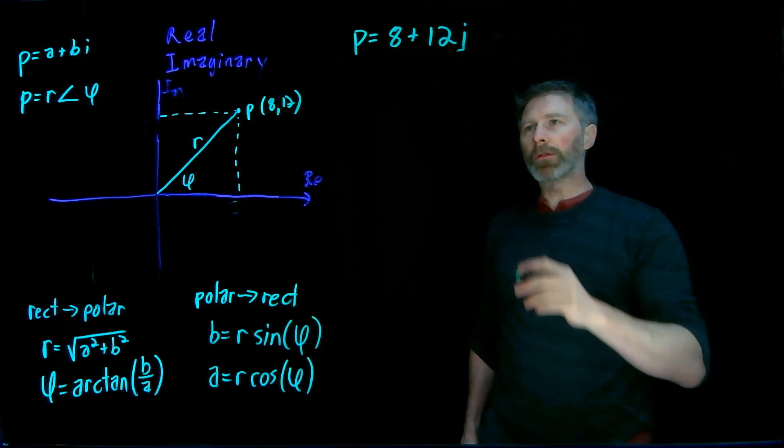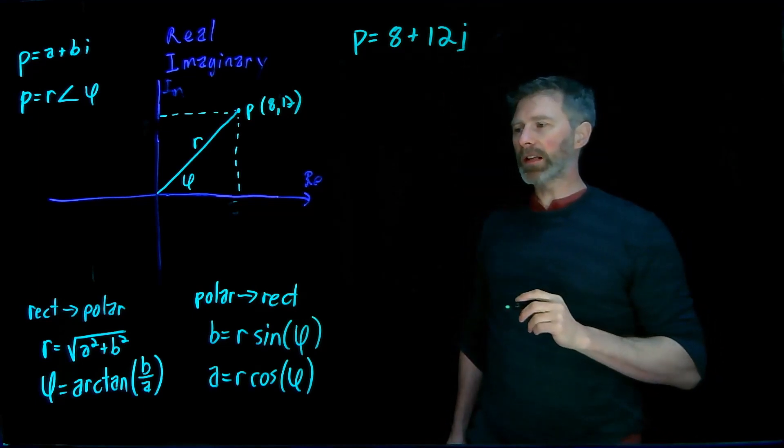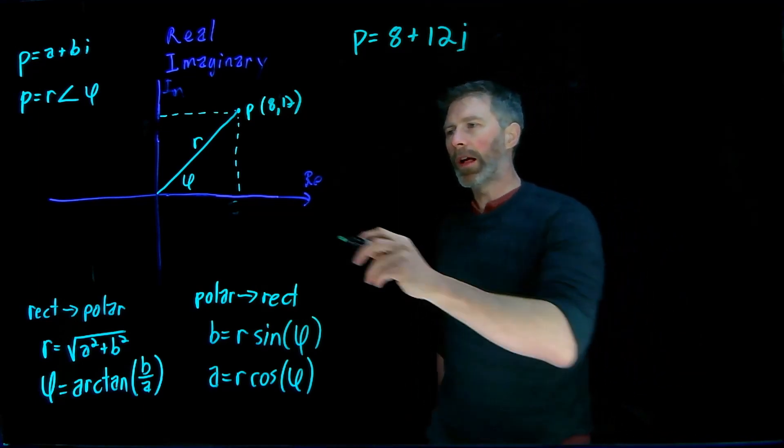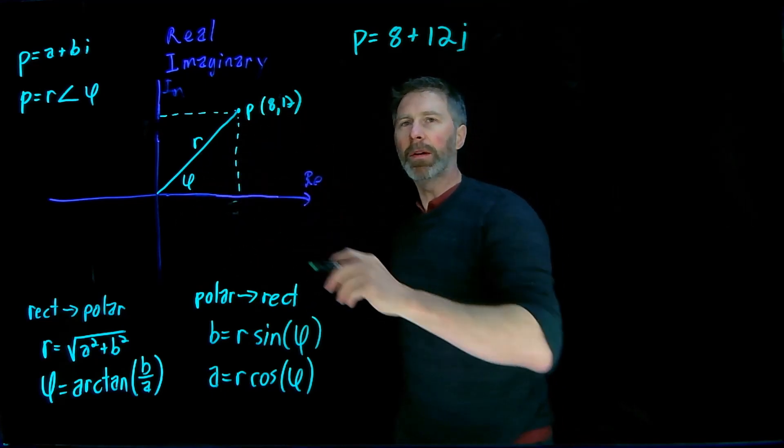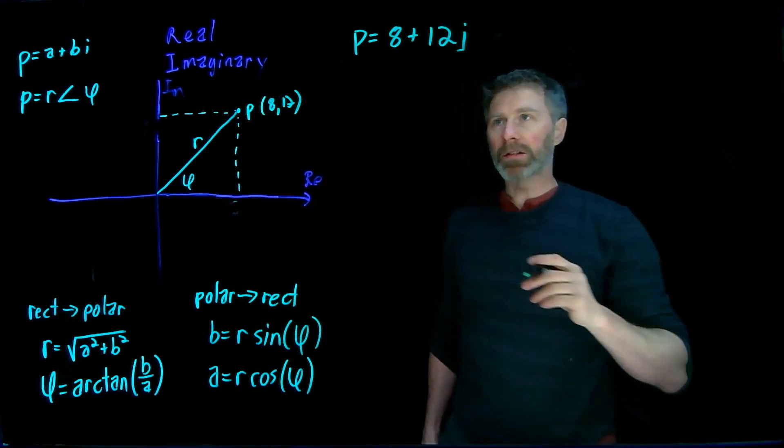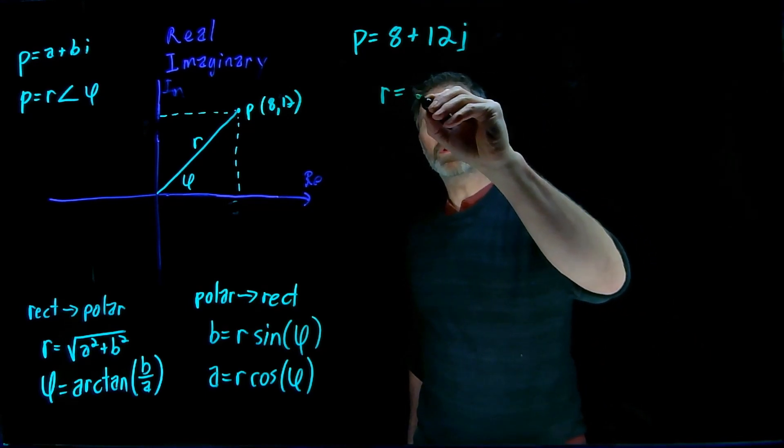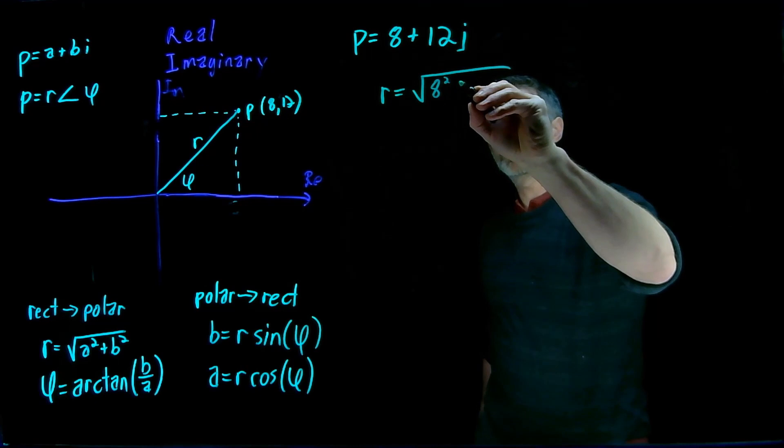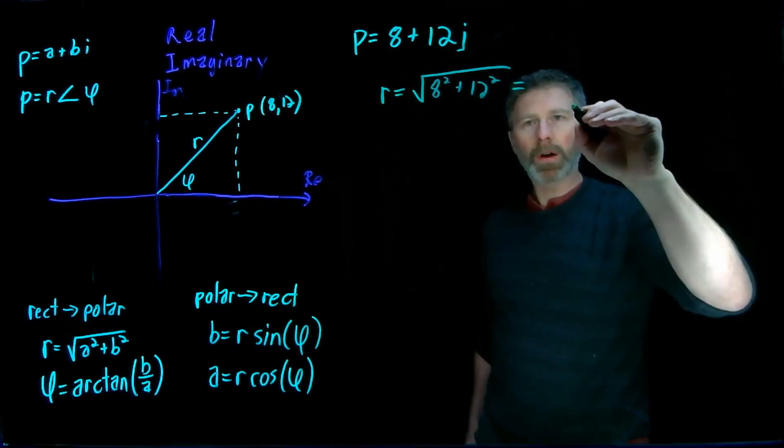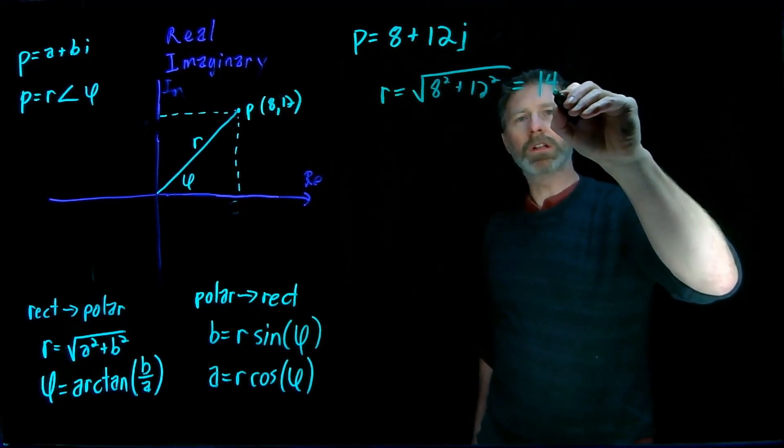And I want to convert it from this rectangular coordinates into the polar coordinates. Well, I need to find out what the length of the line is and what the angle that line makes with the real axis. Well, R will be equal to the square root of 8 squared plus 12 squared. And that works out to 14.42.